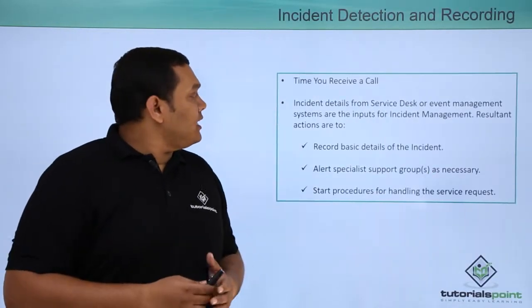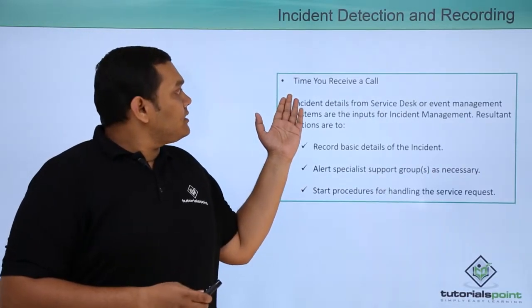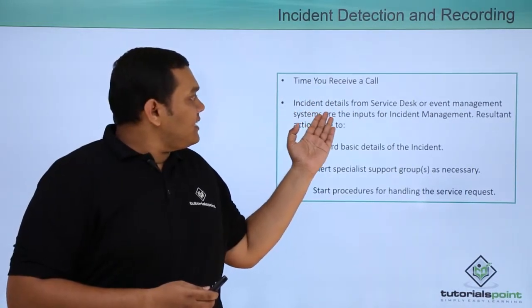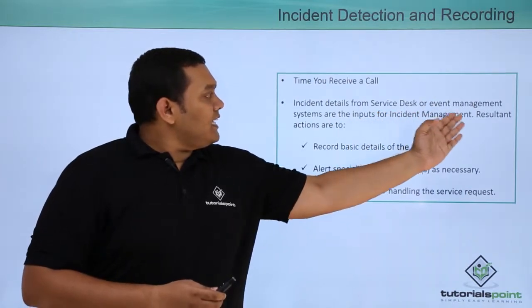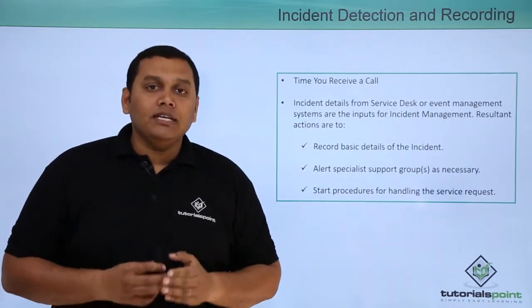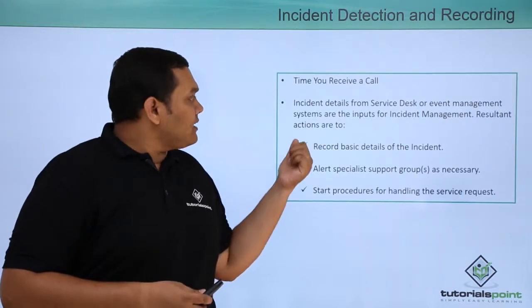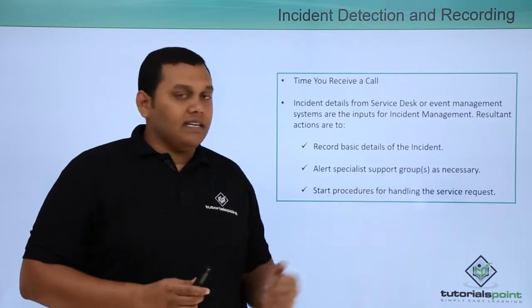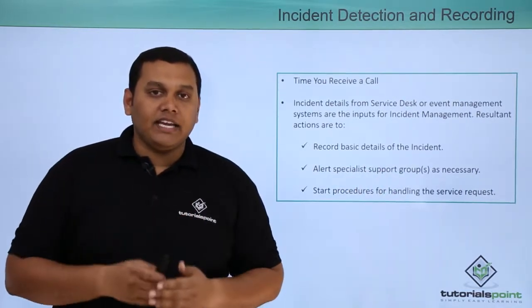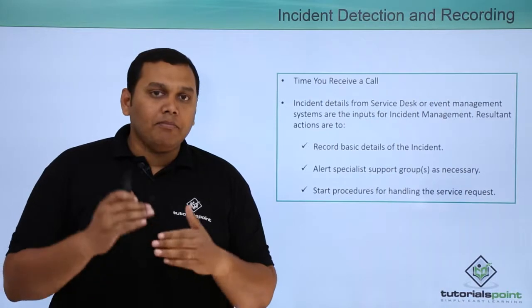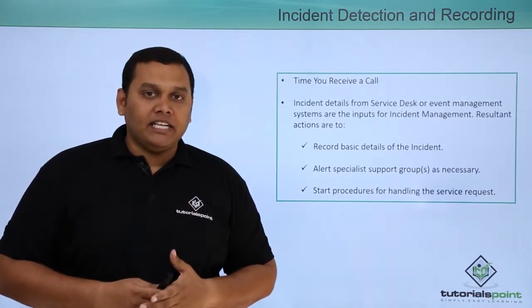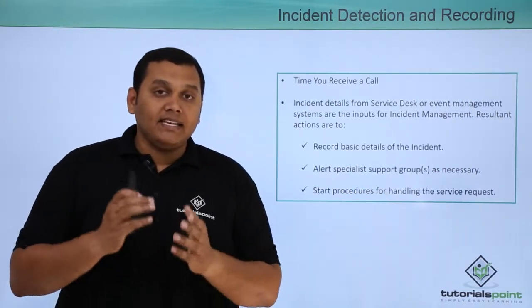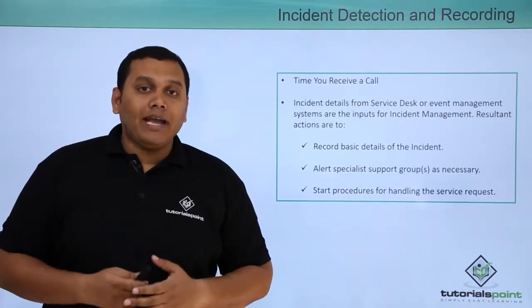In incident detection and recording, the first point is the first time you receive a call. The second point is that incident details from the service desk or event management systems are the inputs for the incident management team. The resultant actions to be performed are to record basic details of the incident, and to alert specialist support groups as necessary based on the issue categorized.